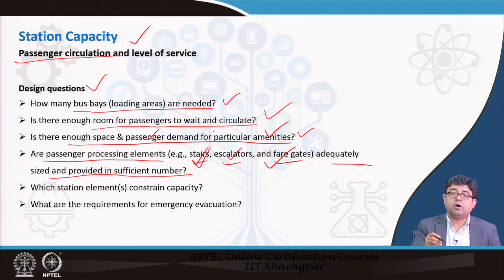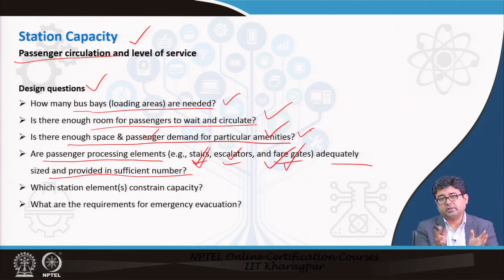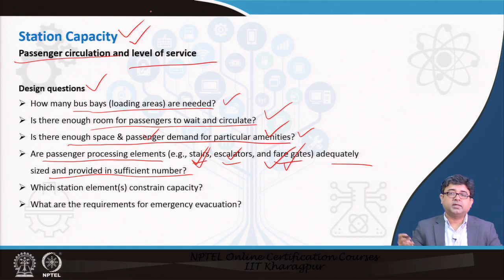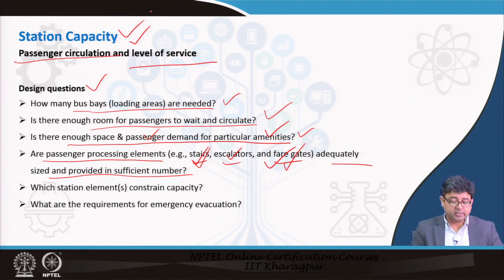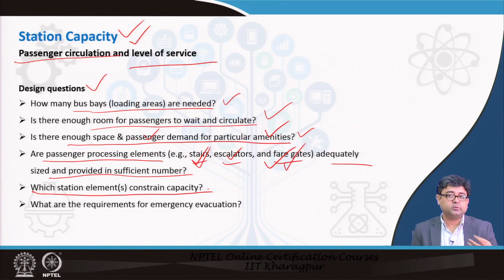You have to calculate the capacity of each element — for example, how many people per hour a stairway can accommodate, or how many people per minute can pass through automatic fare gates. These capacities in turn affect passenger circulation in the station area, which affects the level of service and the overall station capacity. You also need to identify which station area elements constrain capacity — elements that are necessary but obstructing people's flow.